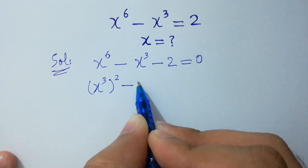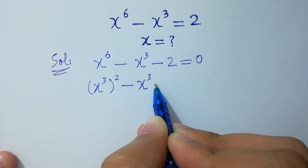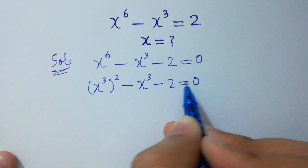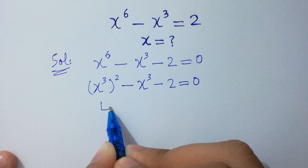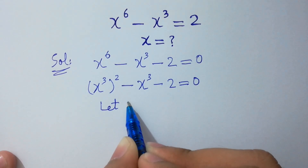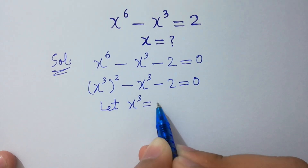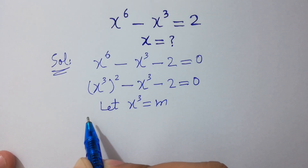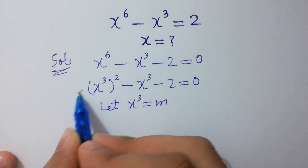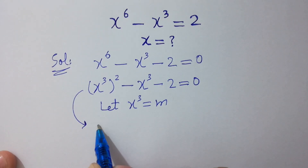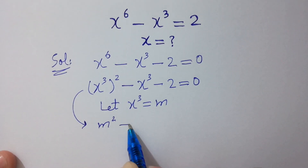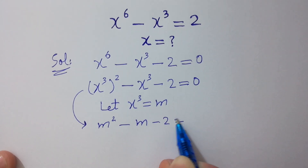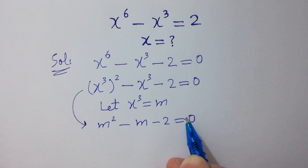So the equation becomes: x cube squared minus x cube minus 2 equal to 0. Let x cube equal to m. Then this equation becomes m squared minus m minus 2 equal to 0.